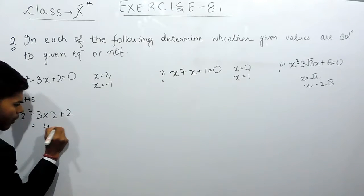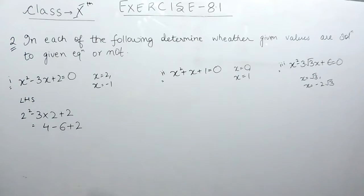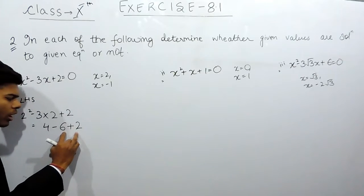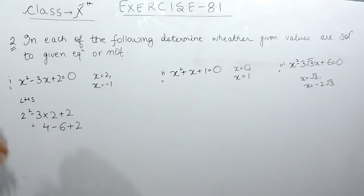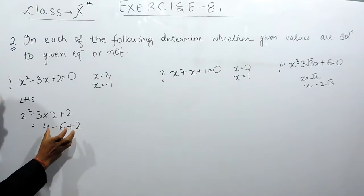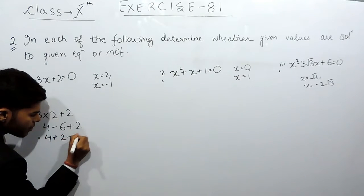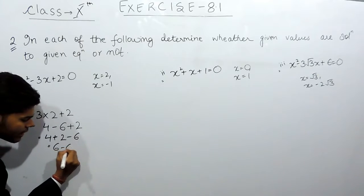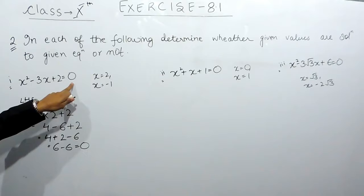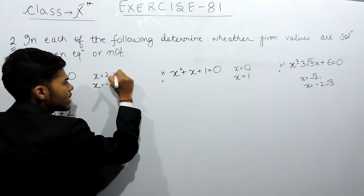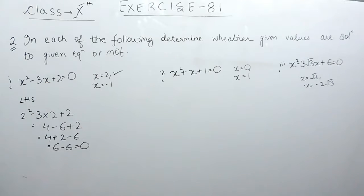left hand side is equal to 2 squared minus 3 multiplied by 2 plus 2, which is equal to 4 minus 6 plus 2. Please don't make the mistake of adding 6 plus 2 to get 8 and then 4 minus 8 equals minus 4. We can write this as 4 plus 2 minus 6, that means 6 minus 6 equals 0. So left hand side equals right hand side, which means x equals 2 is a root of this quadratic equation.